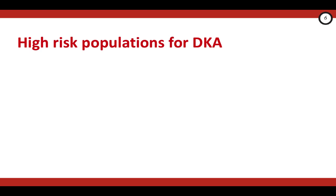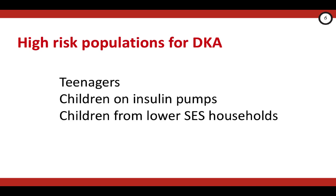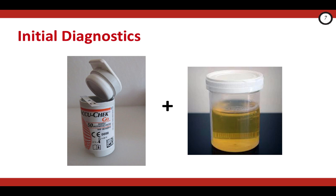If the child is known to have type 1 diabetes, have a high index of suspicion for DKA if they're presenting with these clinical features and are from a population at higher risk for DKA. These high-risk populations are teenagers, children who are on insulin pumps because of pump failure, and children from lower socioeconomic households. For all of these patients, consider getting a capillary glucose and a urinalysis looking for glucose and ketones. It's also important to consider, diagnose, and manage any precipitating cause that might have tipped this child into DKA.